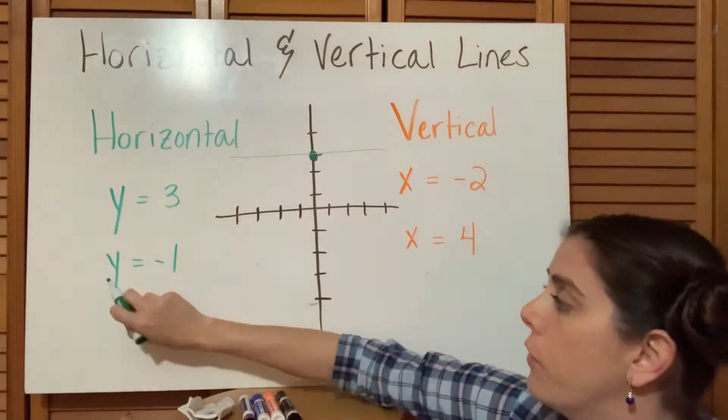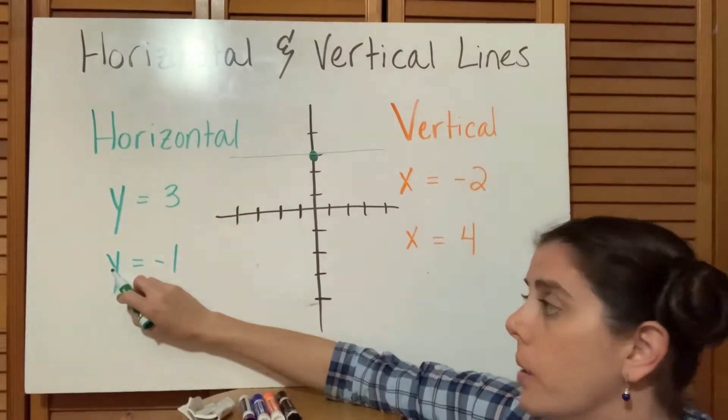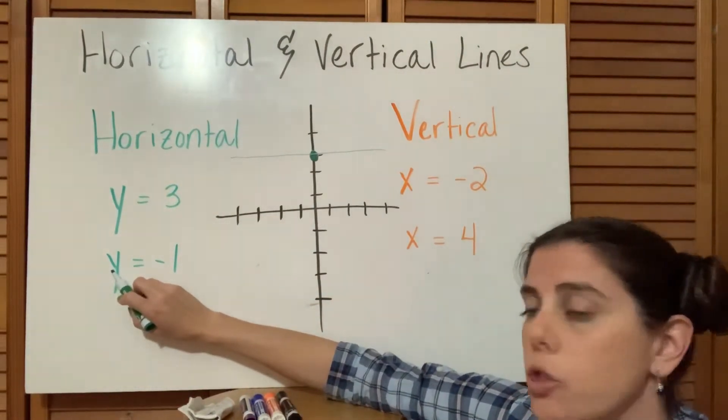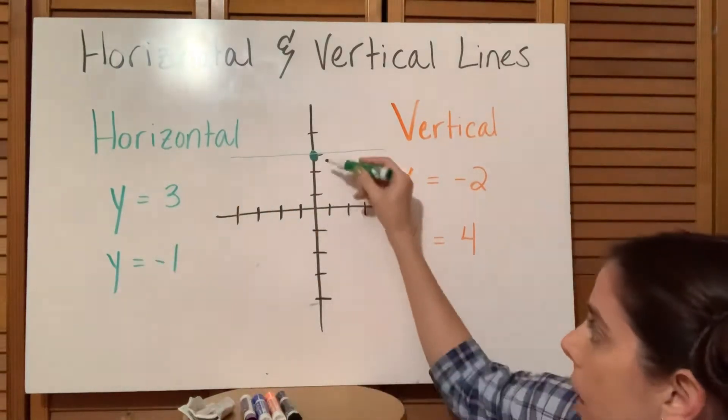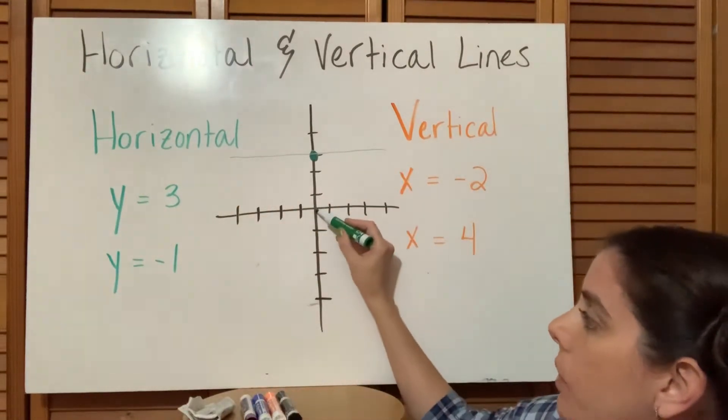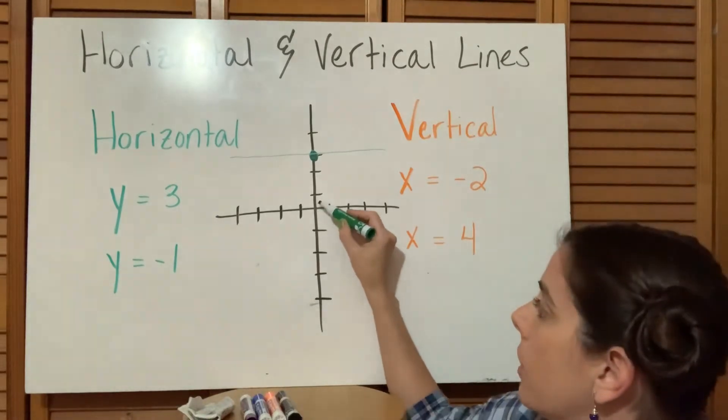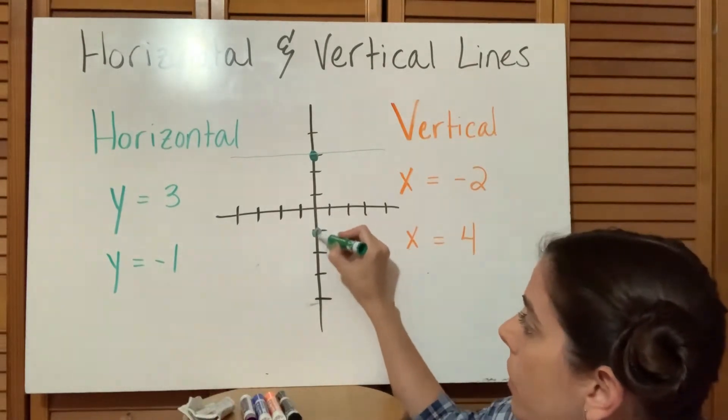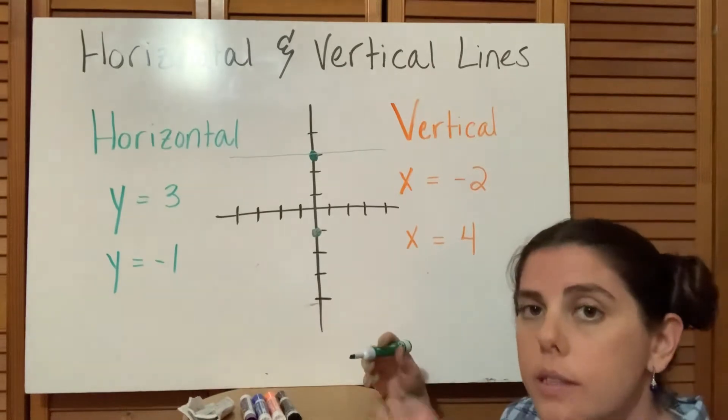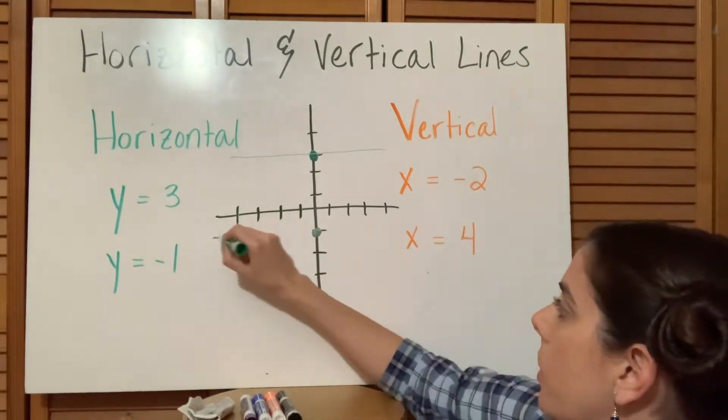For y equals negative 1, again this tells us what axis we're going to travel. We're going to travel the y-axis. Starting at the origin, it's a negative 1, so that means we have to go down 1. This is where the line crosses that y-axis.